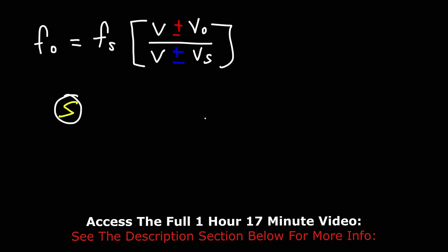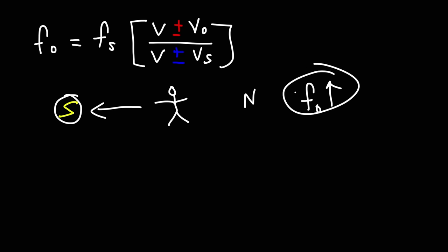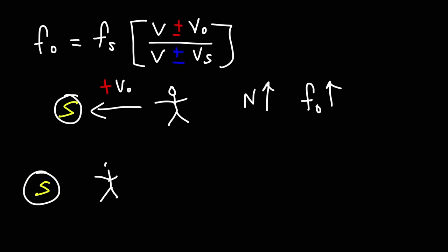Now let's consider when the observer is moving. If the observer moves toward the source, the detected frequency is going to increase. VO is in the numerator of the fraction. To increase FO, we need to increase the numerator, so we use positive VO. Conversely, if the observer is moving away from the source, FO is going to decrease. To decrease the value of the whole fraction, we need to decrease the numerator — so we use negative VO.